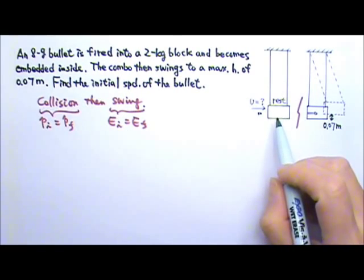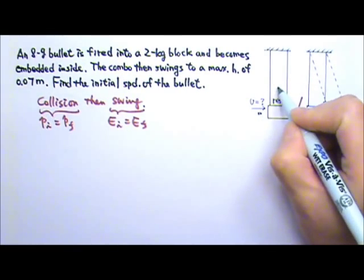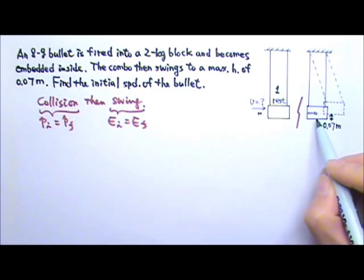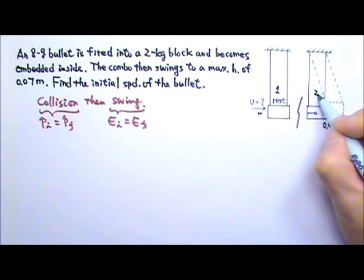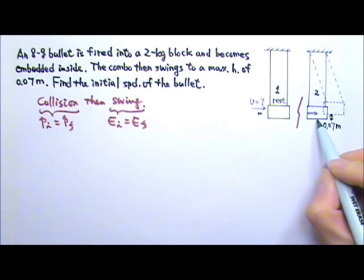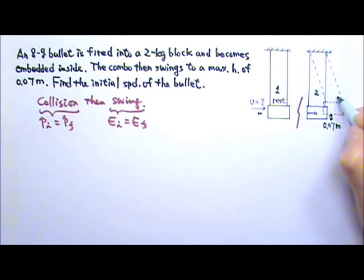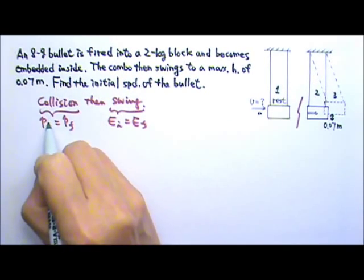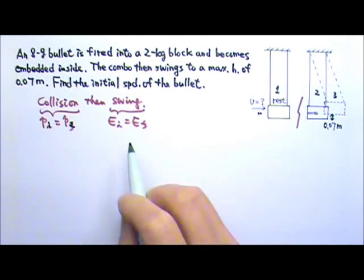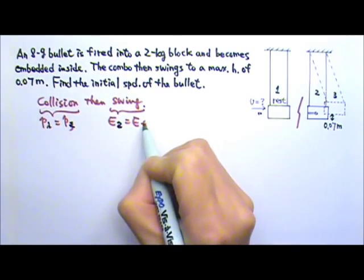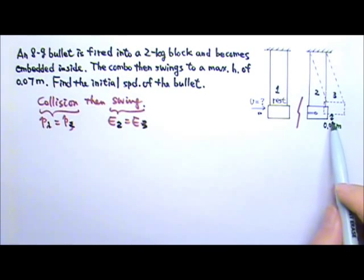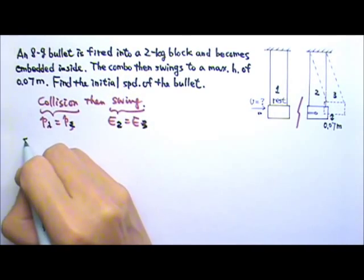There are different stages, so I'm just going to call before collision stage 1, at the end of the collision stage 2. At the end of the collision, that is the beginning of the swing, and then it swings to the maximum height, that's the third stage. So the collision is stage 1 to 2, and then the swinging part is stage 2 to 3. Because we have information about the 0.07 meters maximum height, I'm going to do the swing part first.